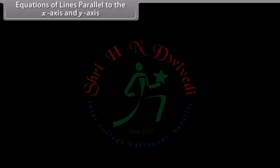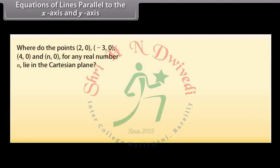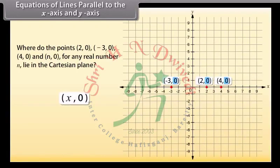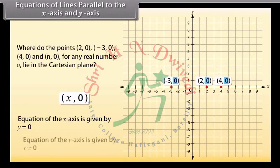Equations of lines parallel to the x-axis and y-axis. Answer one question: where do the points (2, 0), (minus 3, 0), (4, 0), and (n, 0) for any real number n lie in the Cartesian plane? Yes, they all lie on the x-axis. Because on the x-axis the y-coordinate of each point is 0. In fact, every point on the x-axis is of the form (x, 0). So the equation of the x-axis is given by Y equals 0. Similarly, the equation of the y-axis is given by X equals 0.